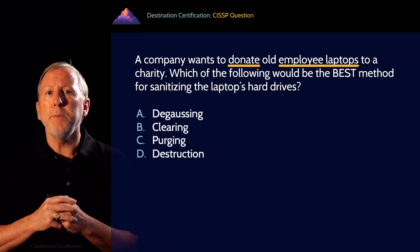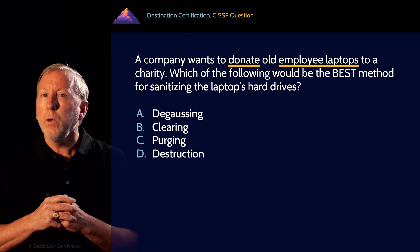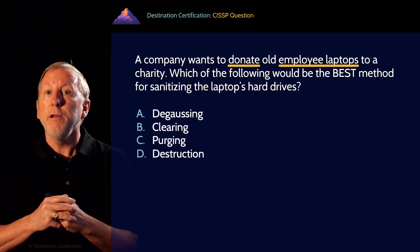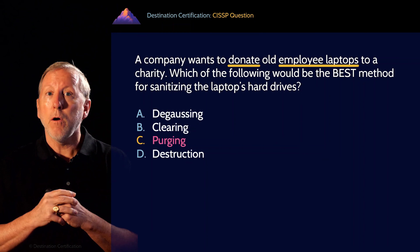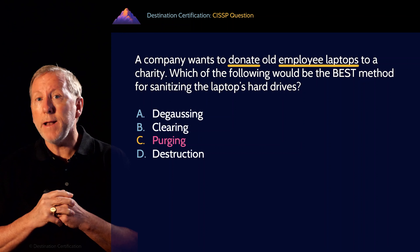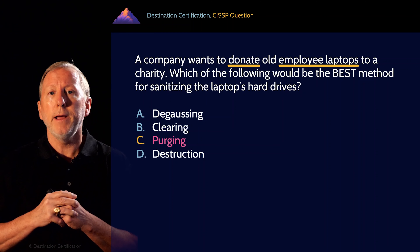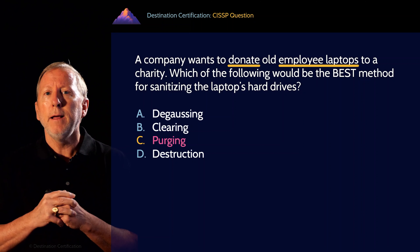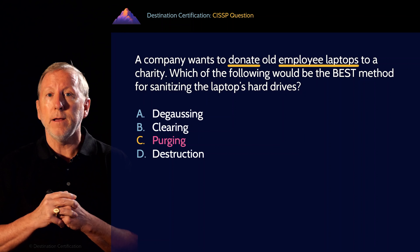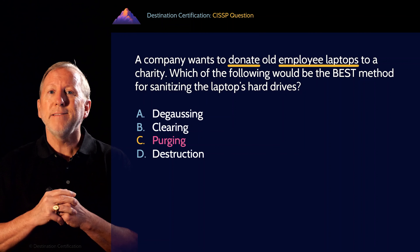Let's take a closer look at answers B and C — clearing and purging. Recall that with purging, data cannot be reconstructed. With clearing, data may not be reconstructed. There's a big difference between the two. Cannot means no way, while may not also implies may — in other words, a way might exist or be identified to reconstruct the data. For the sake of donating the equipment and being assured that employee and organizational data remnants is not an issue, answer C, purging, is the far better answer as the data cannot be reconstructed by any known means.